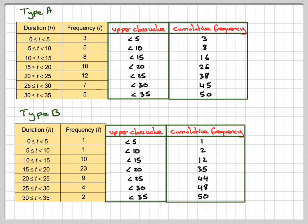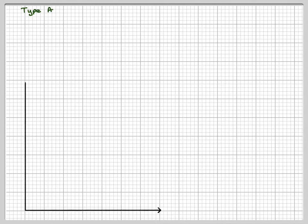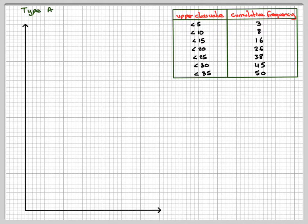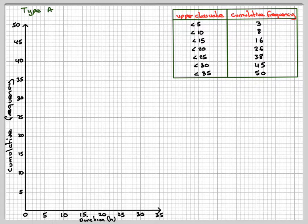And then we get a cumulative frequency. Now to draw the cumulative frequency curve, we've got upper class values again. Along this axis you have the duration, the vertical axis is cumulative frequency. And you plot 5 against 3, 10 against 8, 15 against 16, 20 against 26, 25 against 38, 30 against 45, and then 35 against 50. Draw them up in a nice smooth curve.